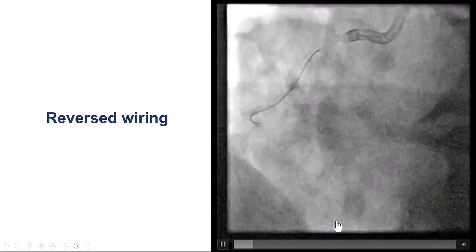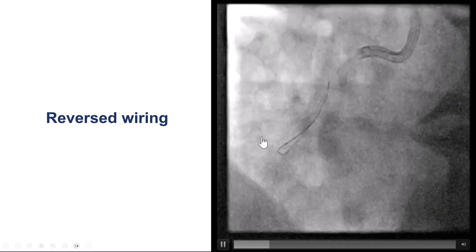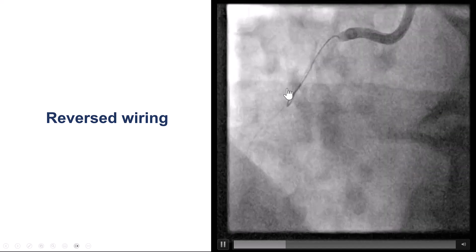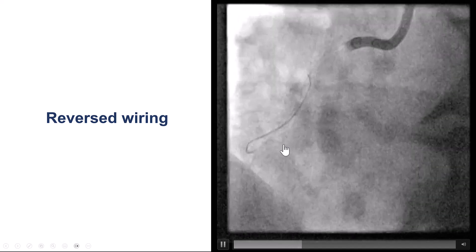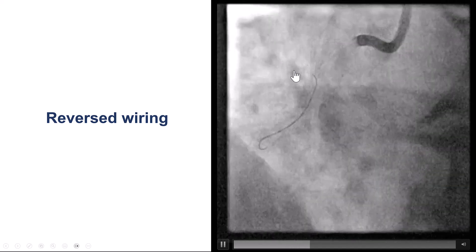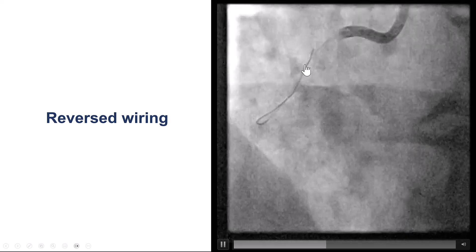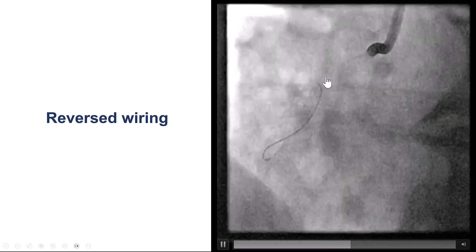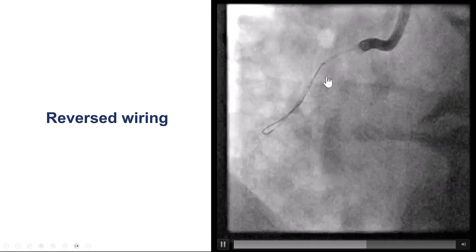In this case, we first tried the reversed guidewire. This is a Sion Black that is bent, and we are advancing it distally then pulling it back. Unfortunately, we could not make the tip engage into the anomalous circumflex.